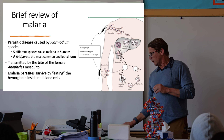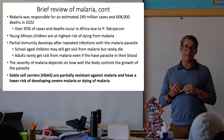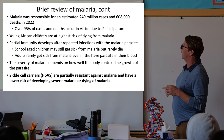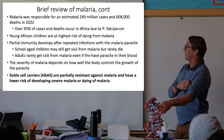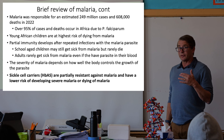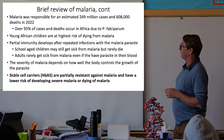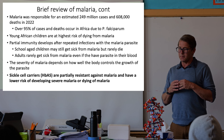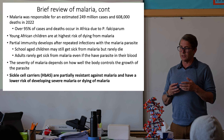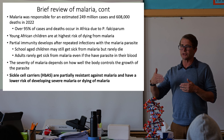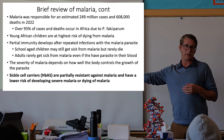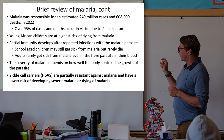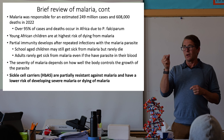Malaria is a big deal. It's the number one cause of death in children in Africa. It caused over 250 million cases and over 600,000 deaths in 2022. Ninety-five percent of those deaths and cases happen in Africa. Young children are at highest risk of dying from malaria — you're born, most kids get malaria early in life, and it either kills you or you survive. If you survive, you eventually develop immunity so that as an adult, you don't get sick from malaria anymore. But a lot of kids don't make it.